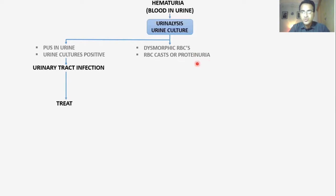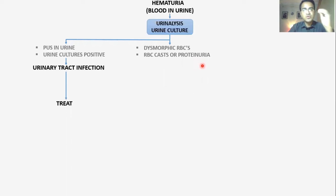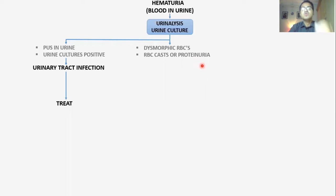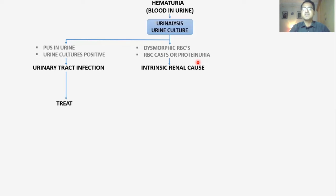You will also find proteinuria — loss of protein in urine. Normally no protein is lost in urine, so proteinuria is abnormal. Whenever there is loss of protein in urine, it means there is damage within the kidneys and something is wrong with the glomerulus. Proteinuria points toward an intrinsic renal cause. Dysmorphic RBCs, RBC casts, and proteinuria all point toward an intrinsic renal cause.